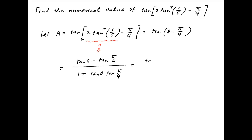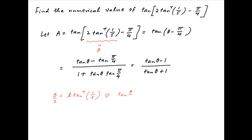Since tan(π upon 4) is equal to 1, the value of a simplifies to (tan θ minus 1) divided by (tan θ plus 1). Now θ equals 2 times tan inverse 1 upon 5, so dividing both sides by 2 gives θ upon 2 equals tan inverse 1 upon 5, and therefore tan(θ upon 2) equals 1 upon 5.